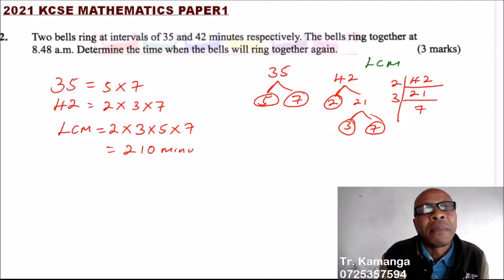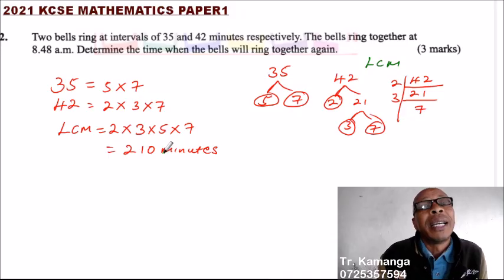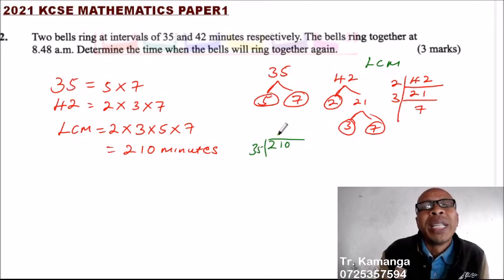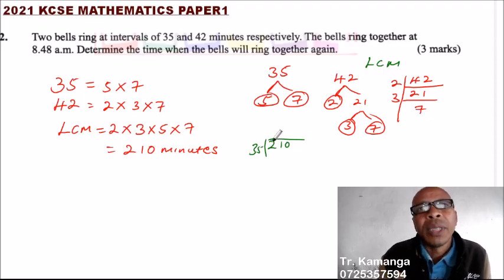210 minutes, that is the number of minutes that the two bells will ring together. If you divide 210 by 35, you will be able to get a whole value. You can say 210 divide by 35. You divide by 2 is 70. By 3 is 105. This will be 6 times that.